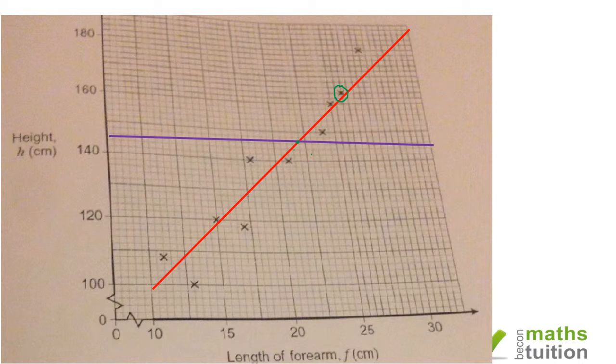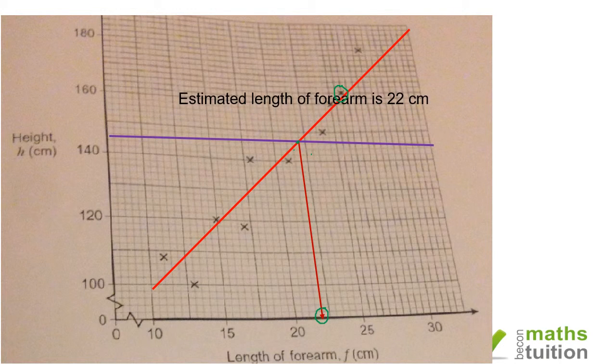I'm going to drop a vertical line from this point to the horizontal axis. From that I can predict that the length of the forearm of a person who is 145 centimeters tall is going to be 22 centimeters. That's what they mean by show clearly how you obtain your estimate. You must plot a line of best fit.